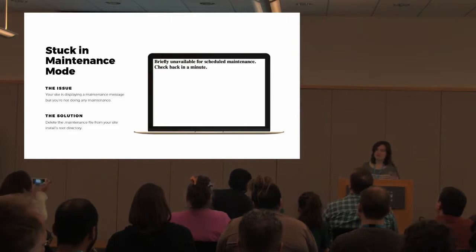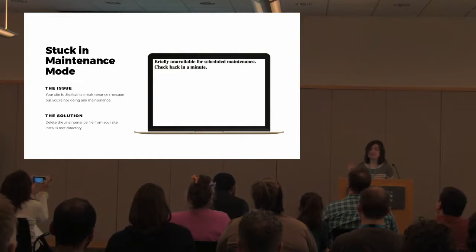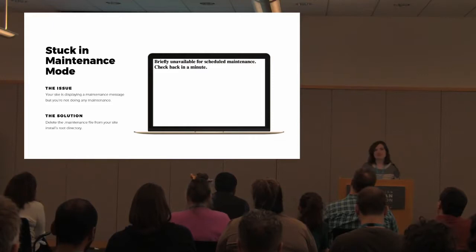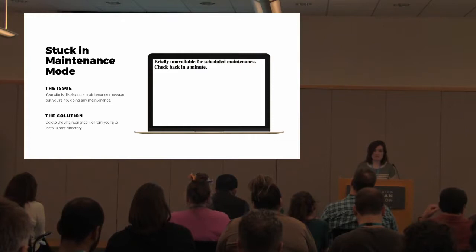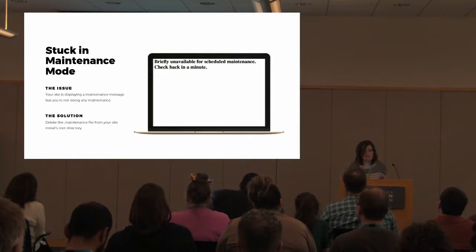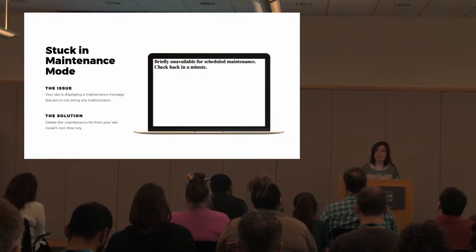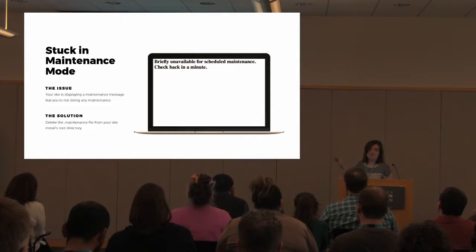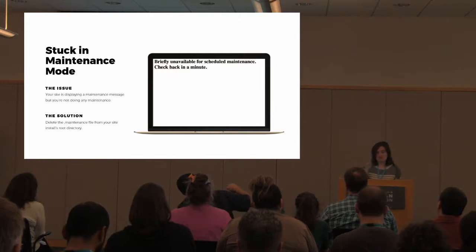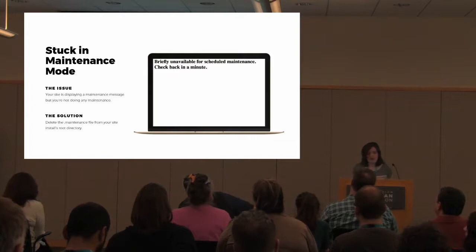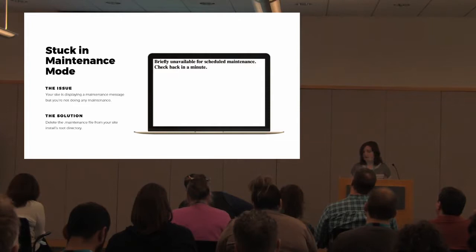Occasionally — and I'm honest this has only happened to me once in my entire career — you may see a maintenance mode message. When WordPress updates plugins or core, it puts your site into maintenance mode so visitors don't see anything wonky while files are updating. If something happens and WordPress can't auto-remove that maintenance file, you'll keep seeing that message on the front end even though your admin is fine. The fix is as simple as logging in via FTP and deleting the .maintenance file from your site's directory, and then everything will be up and running.